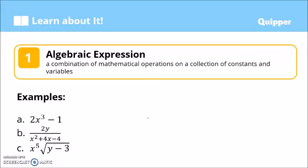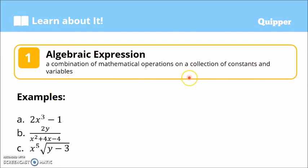What is an algebraic expression? An algebraic expression is a combination of mathematical operations on a collection of constants and variables. Take note of the words: mathematical operations, constants, and variables. An algebraic expression can be constants, variables, or a combination of constants and variables combined by mathematical operations.